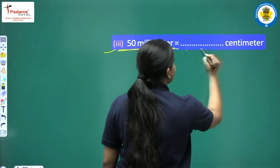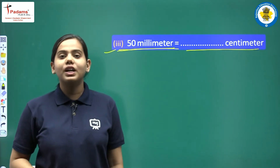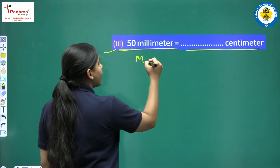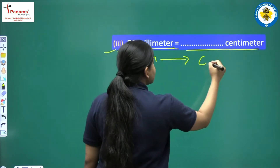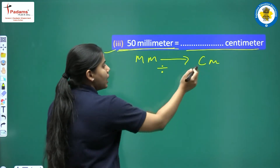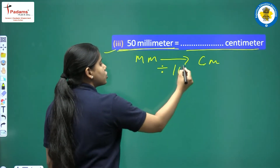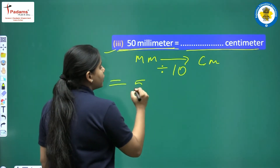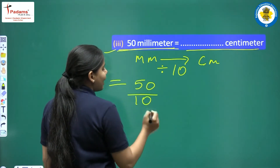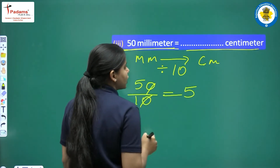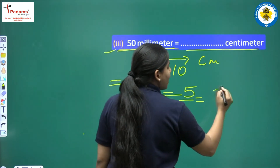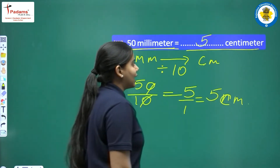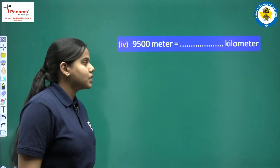Third: 50 millimeters equals dash centimeters. We have to convert millimeters into centimeters. Millimeter is a smaller unit than centimeter, so here we will divide. Because 1 centimeter equals 10 millimeters, we divide by 10. So 50 divided by 10 — zero cancels zero, and the answer is 5. Because 5 upon 1 also equals 5. So the answer is directly 5 centimeters.